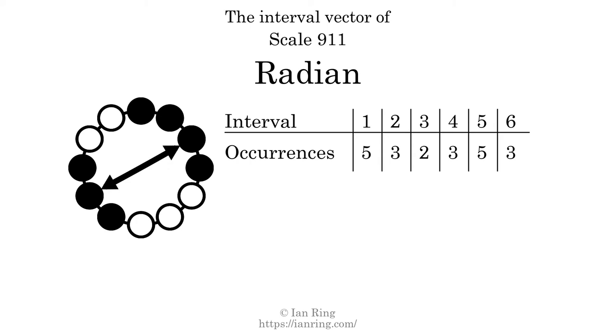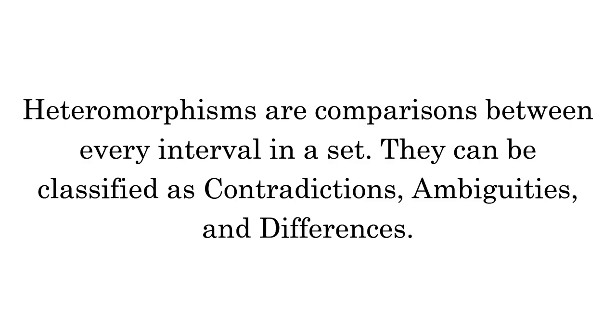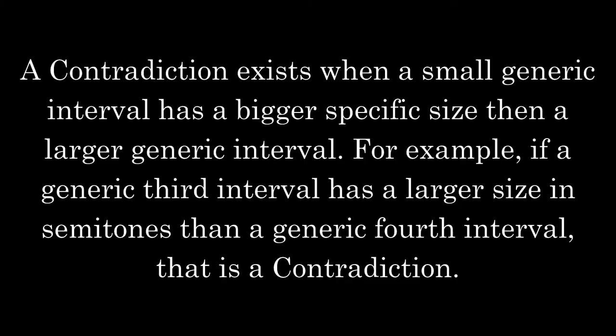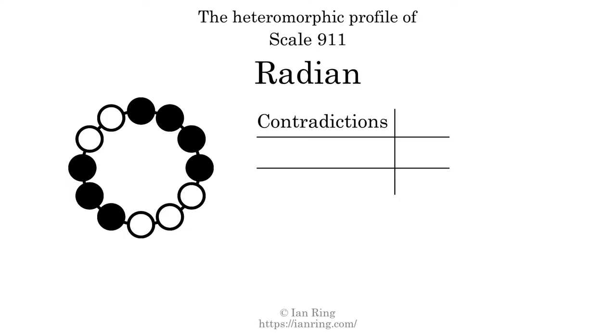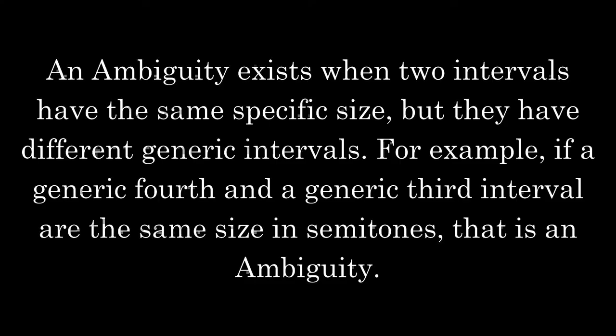Heteromorphisms are comparisons between every interval in a set. They can be classified as contradictions, ambiguities, and differences. A contradiction exists when a small generic interval has a bigger specific size than a larger generic interval — for example, if a generic third interval has a larger size in semitones than a generic fourth interval. The number of contradictions in this scale is 22. An ambiguity exists when two intervals have the same specific size but different generic intervals. The number of ambiguities in this scale is 27.